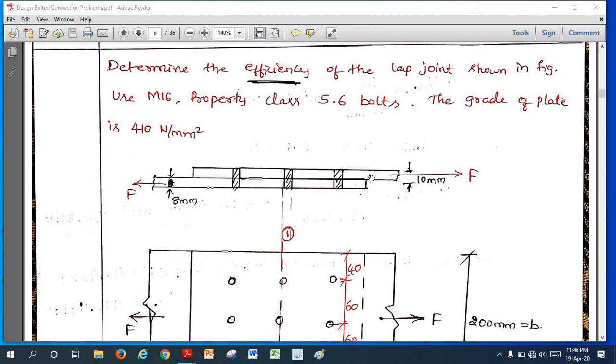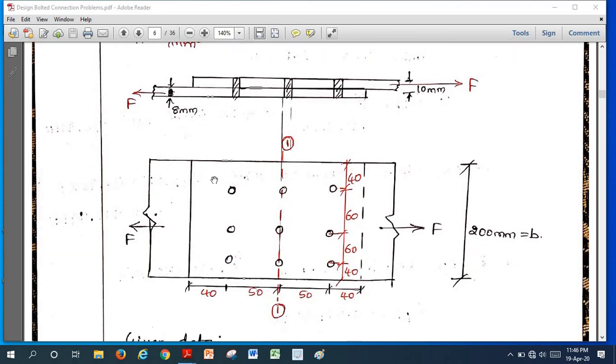They are connecting two plates in the form of lap joint, that is, they are placed one above the other. Thickness of the top is 10 mm, bottom plate is 8 mm. This is the force direction. This is another view of the joint they are given.